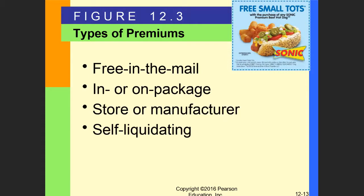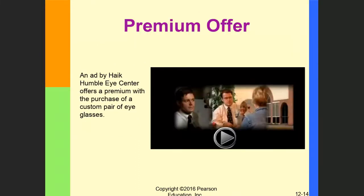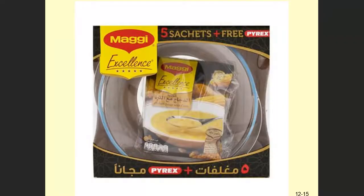Premiums can be a free gift. For example, in fast food restaurants: free dessert, free drink, a free cup, or the toys kids get in Happy Meals — all of these are kinds of premiums. For example: 'Free small tots with purchase of any Sonic premium beef hot dog.' There are different kinds — free in-mail, package, self-liquidating, store or manufacturer. One interesting example is an eye center that gives a custom pair of eyeglasses every time you go for your eye inspection — a very relevant gift.